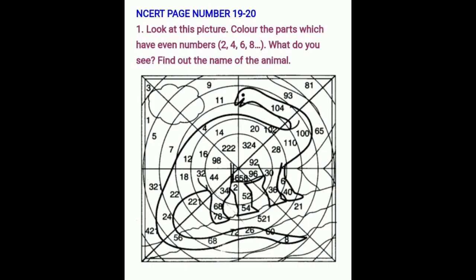Now look at this picture — color the parts which have even numbers 2, 4, 6, 8. What do we see? Find out the name of the animal. Connect them according to the numbering given here and see what it forms. The answer is: it is a dinosaur's picture — color it.